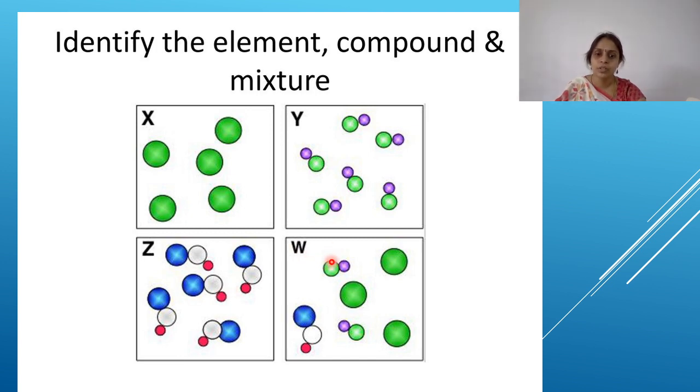Coming to W, you can see this stuff. You can see these three things combined. You can see individual stuff which is present. So automatically it is mixture.